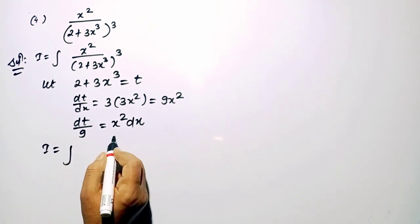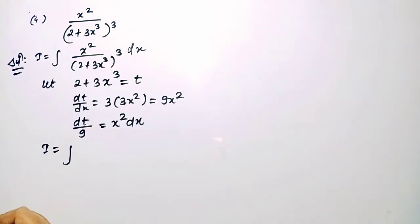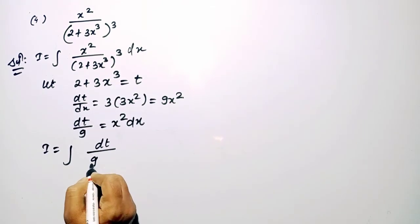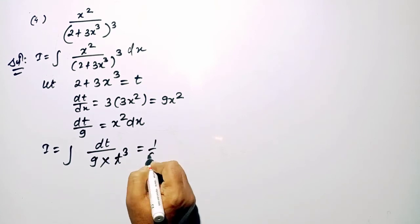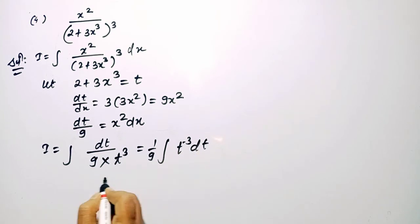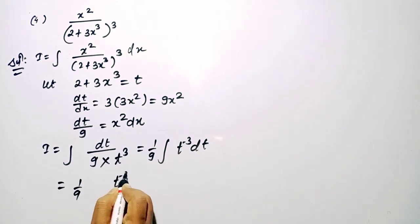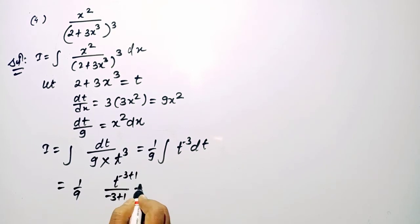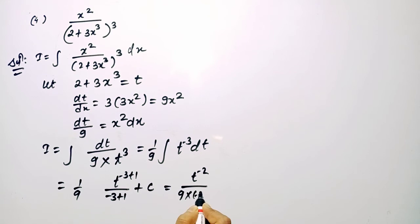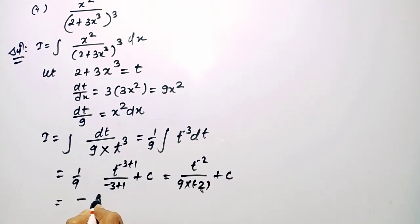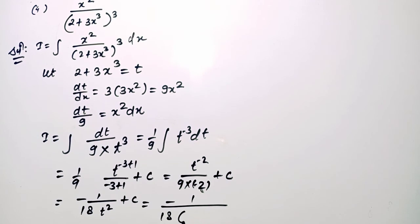Substituting, the integral becomes integration of dt upon 9 into t cube, which is 1 upon 9 times integration of t to the power minus 3 dt. Applying the power rule: t to the power (minus 3 plus 1) divided by (minus 3 plus 1), giving 1 upon 9 times t to the power minus 2 upon minus 2 plus c. This simplifies to minus 1 upon 18 t square plus c. Substituting back, t equals 2 plus 3x cube, so the answer is minus 1 upon 18(2 plus 3x cube) square plus c.